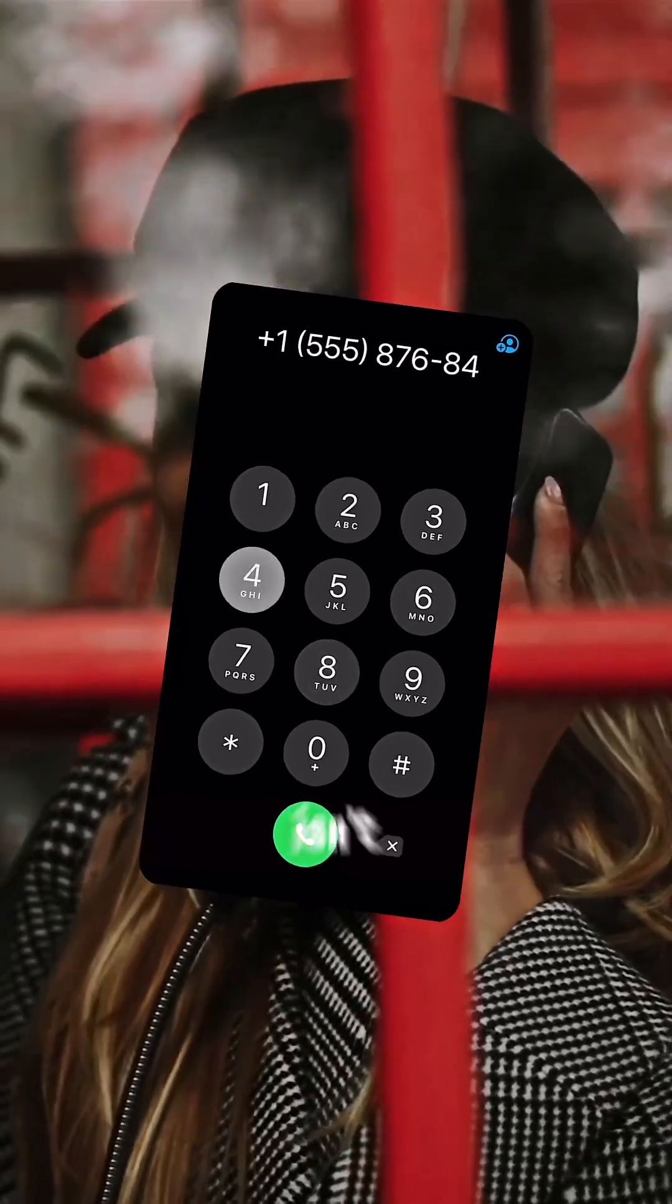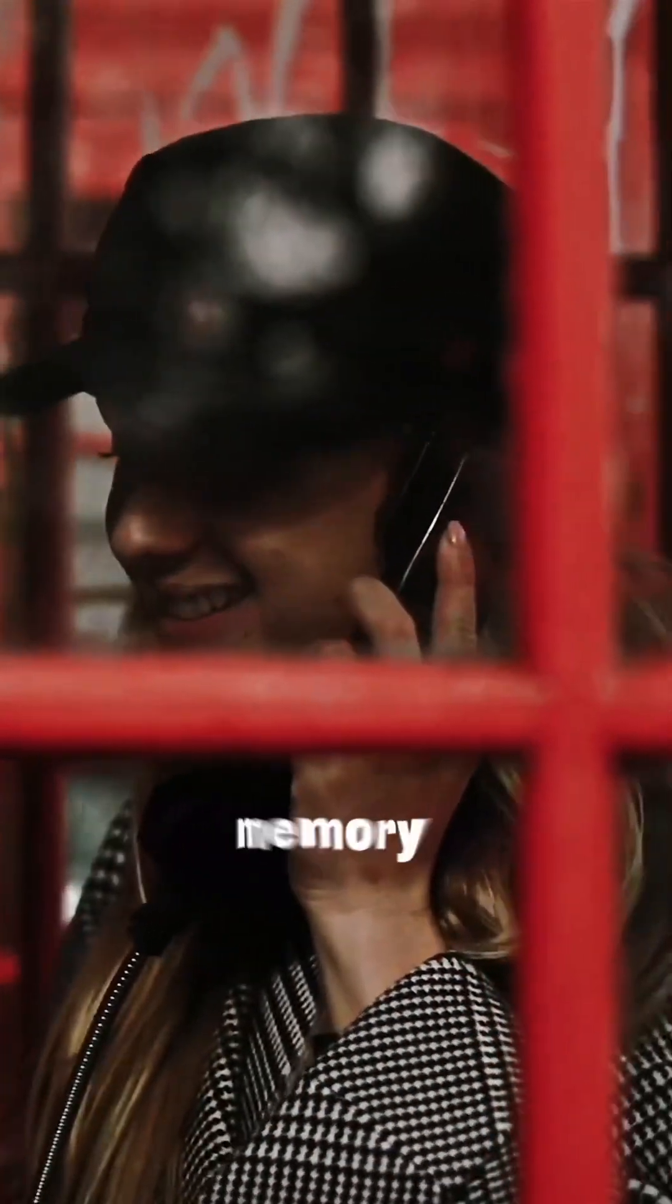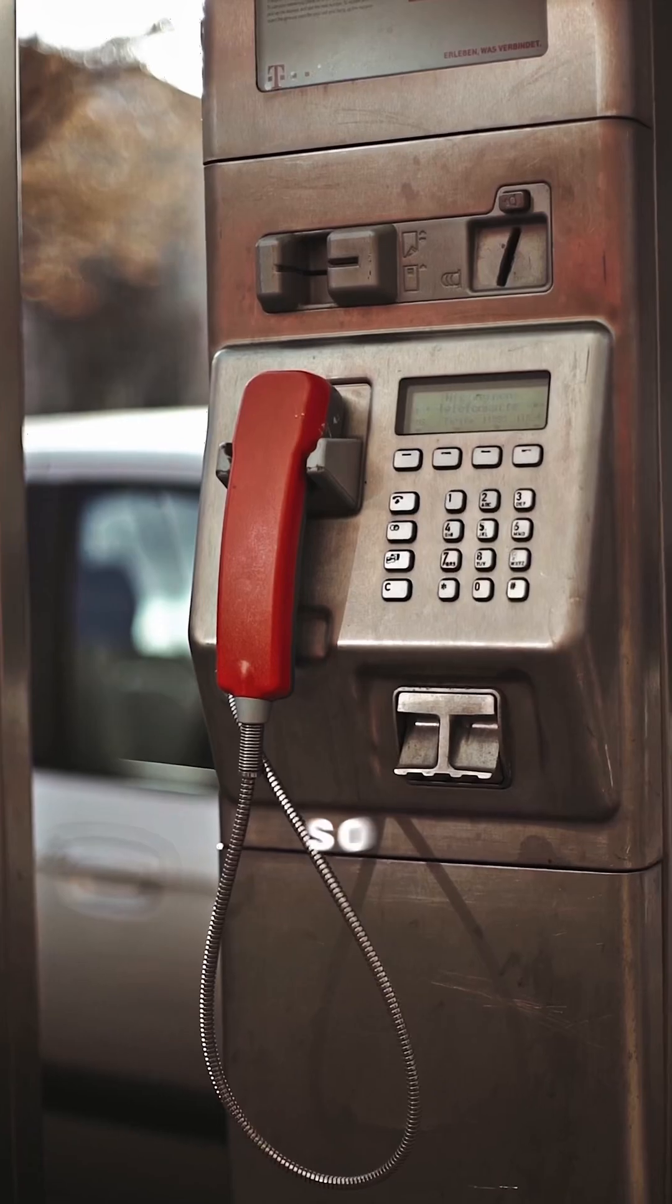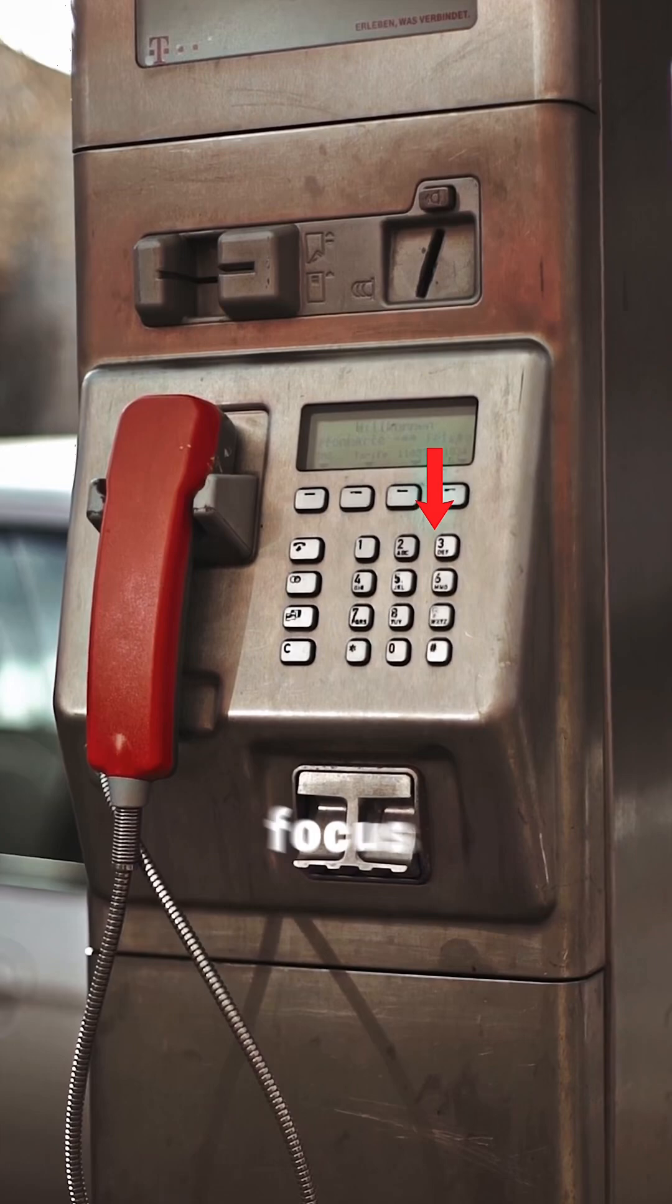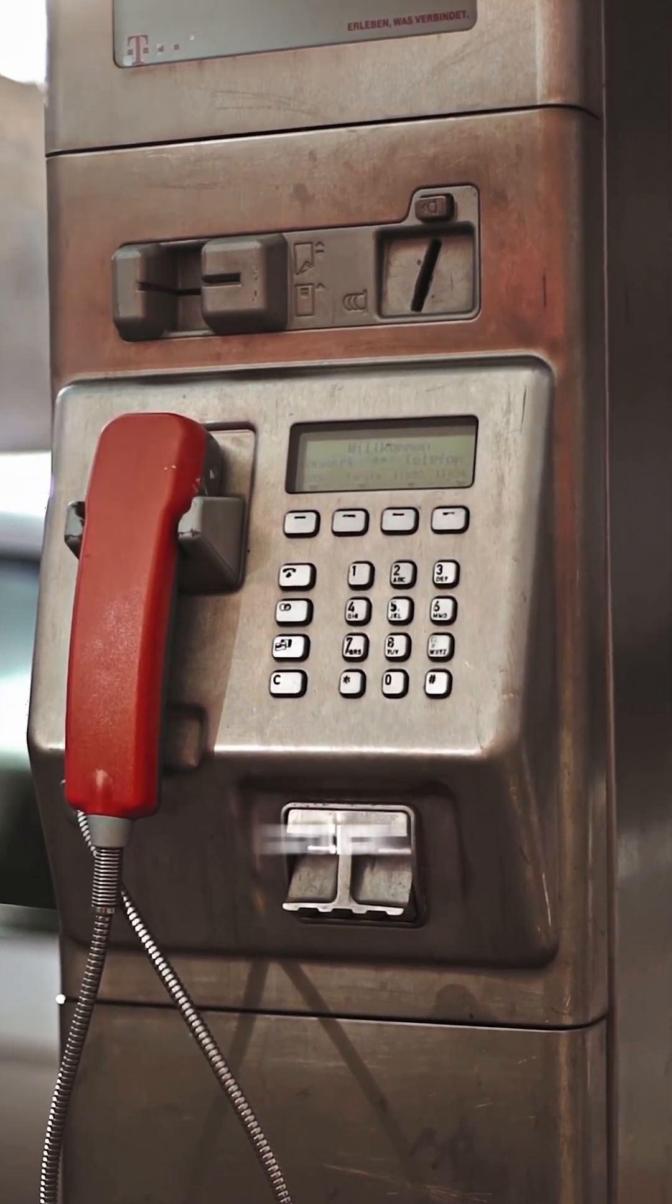Dialing phone numbers isn't the same as doing math. People didn't have the same muscle memory for numbers in this context, so slowing them down slightly reduced errors. The 1-2-3 layout made users focus on accuracy, which was critical at the time.